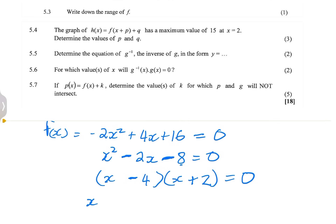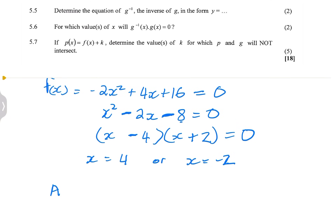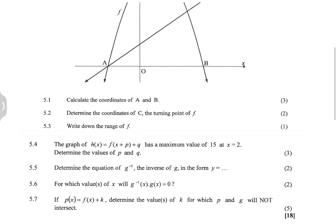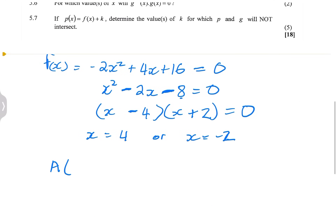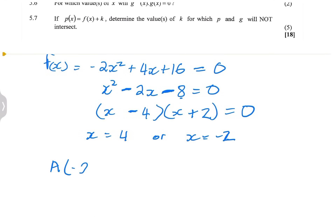So it means that X is equal to four or X is equal to negative two. Remember, we're looking for the coordinates. A is on the negative side, so that's going to be negative two and zero. And the coordinates of B would be four and zero.